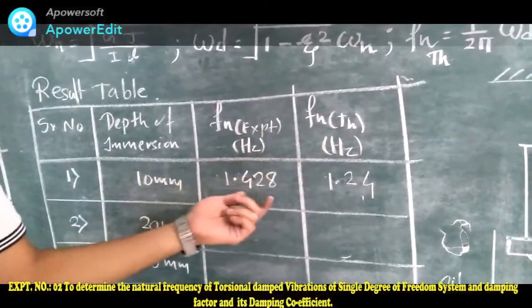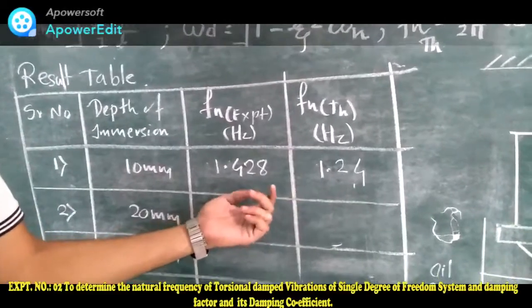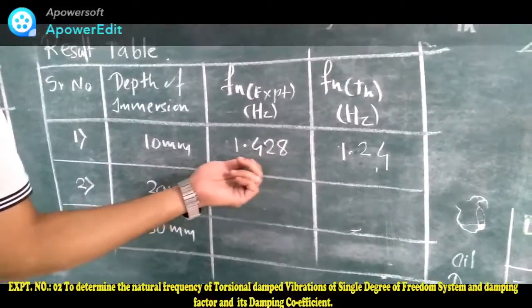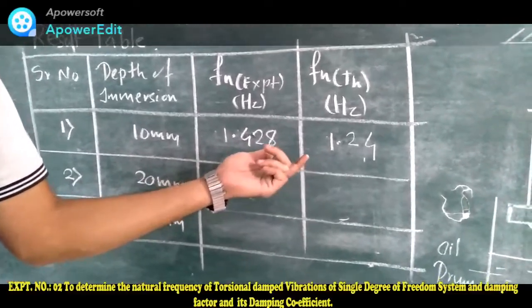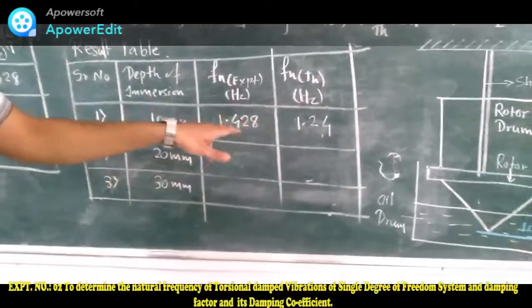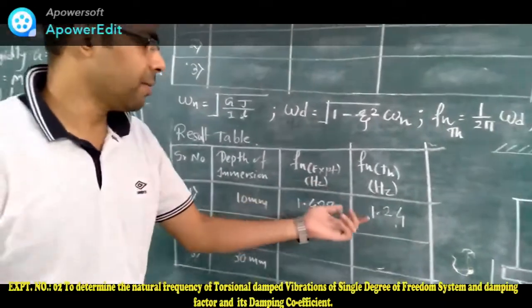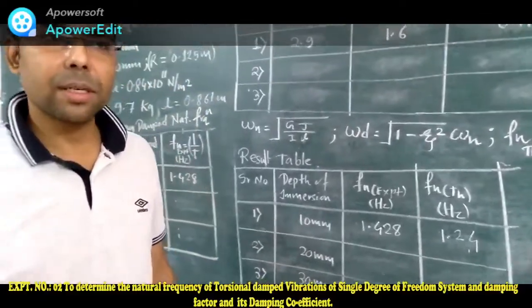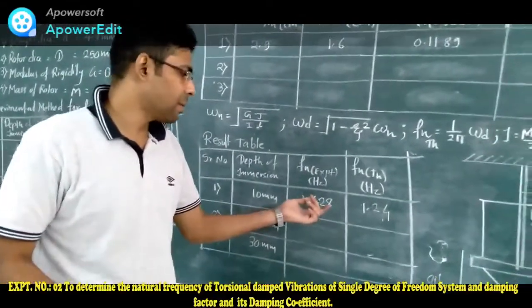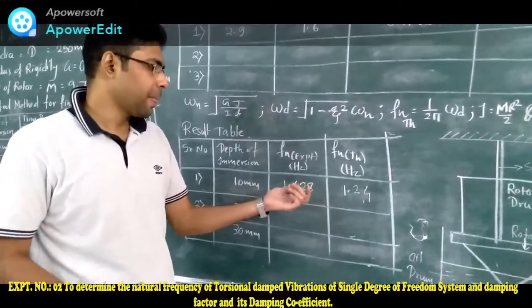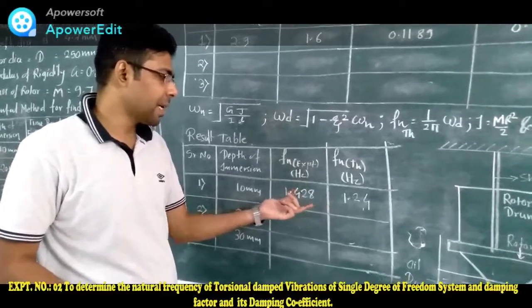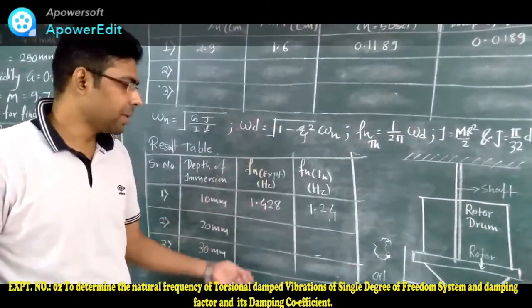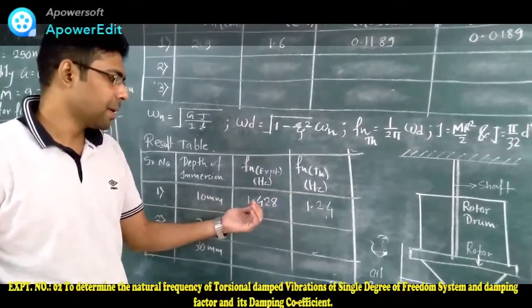There is a slight difference between theoretical and practical values, but we can consider them almost equal. The error between theoretical and practical values is due to experimental apparatus limitations and human error. We can predict the performance of our equipment through theoretical calculation and validate it by comparing with practical values.